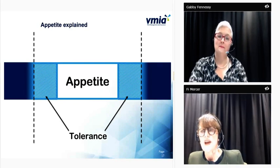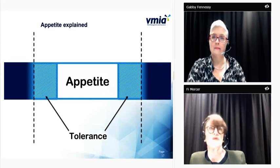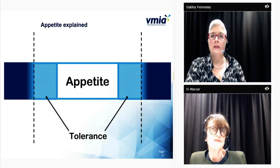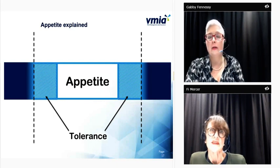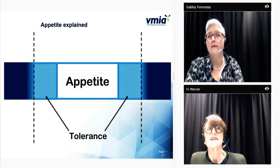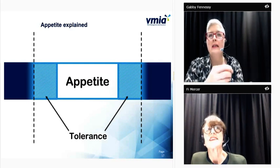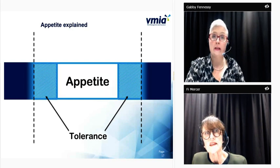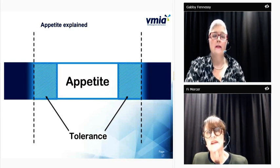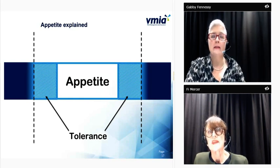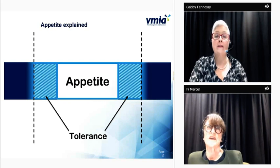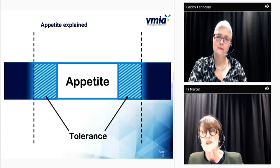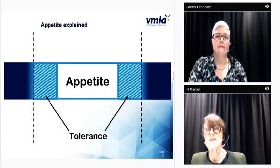How would you document or frame a board's risk appetite statement? I'd recommend the appetite statement be in relation to a specific strategic risk — for example, around financial sustainability. VMIA has formats available on the website to have a look at. It's a bit of an art writing them up, but they need to be linked to indicators or evidence that is measurable so you can test your tolerance. That information needs to be updated on a regular basis to see how you're going — are you over or under your tolerance?